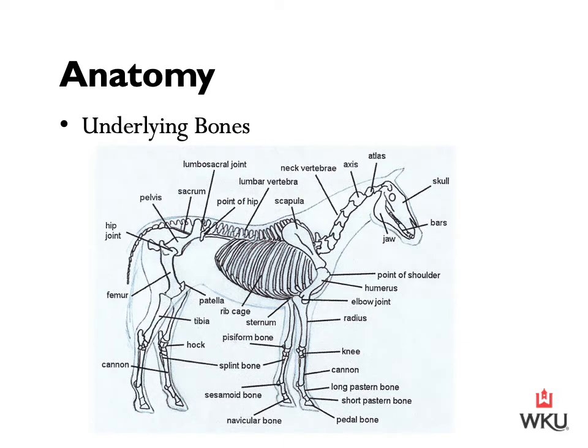Now we have the underlying bones. This diagram — I don't want you to memorize every single bone in here. As we get into the lecture we'll do specific parts of the horse. We'll start with the head, then we'll do the top line, then we'll do the forelimb and the hind limb. I'll let you know which ones are considered testable. I did want to give you a broad overview of the skeletal anatomy of the horse.